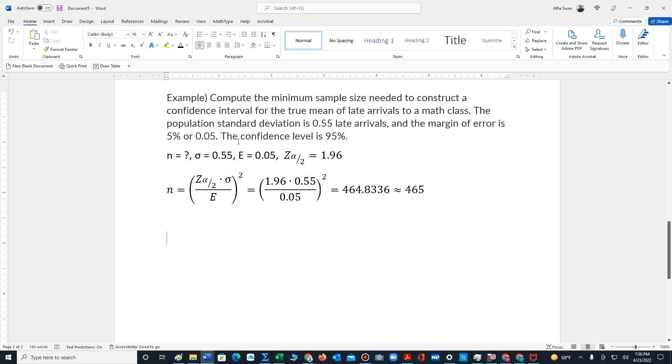The population standard deviation is 0.55 late arrivals, and the margin of error is 5% or 0.05. The confidence level is 95%.